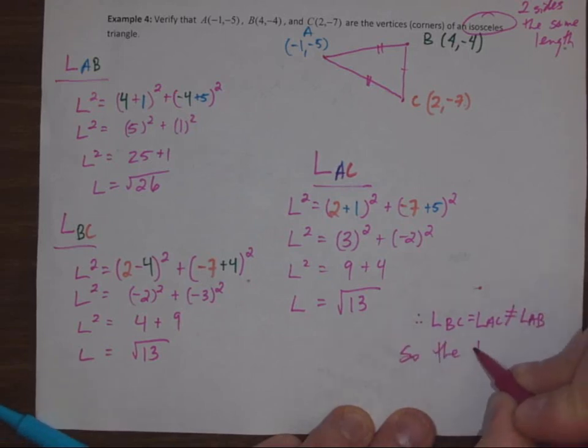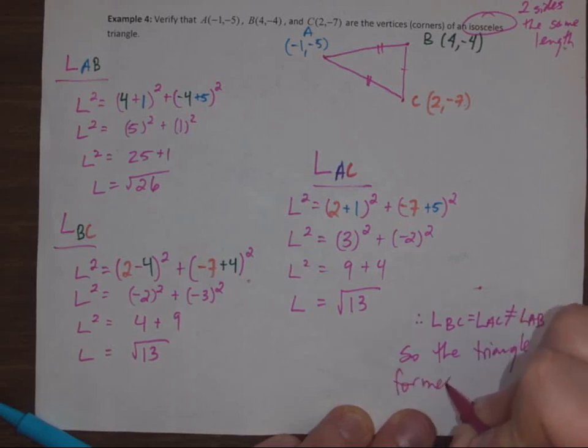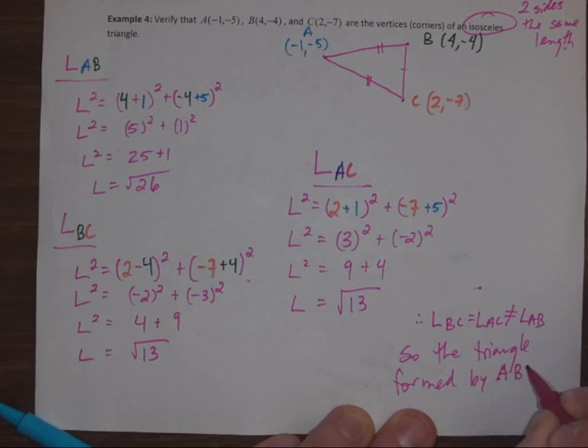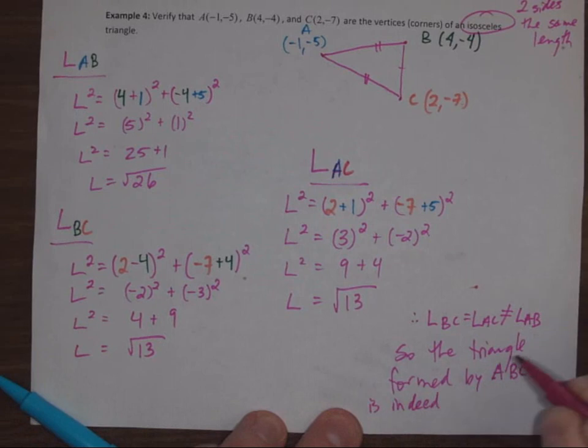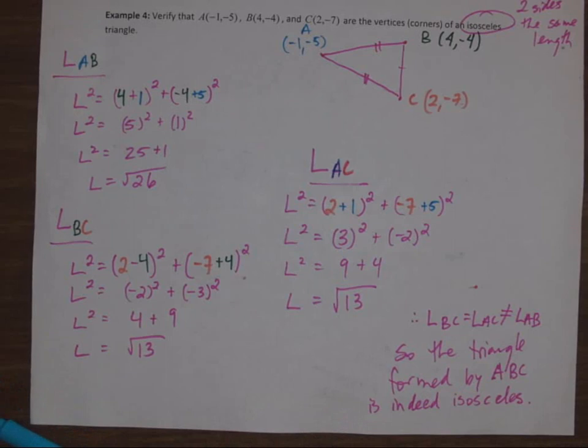So the triangle formed by A, B, C is indeed isosceles.